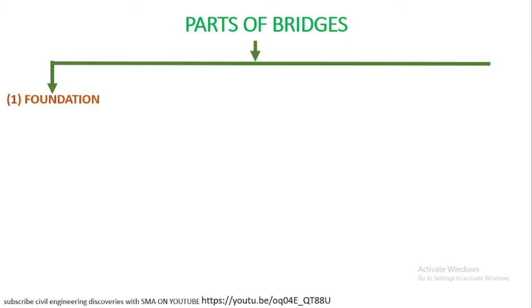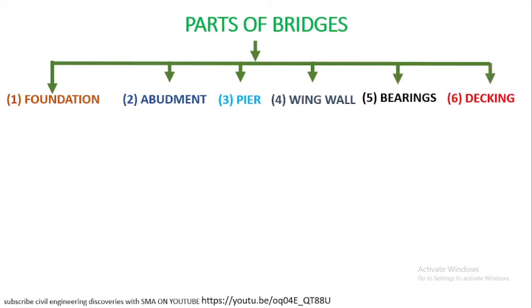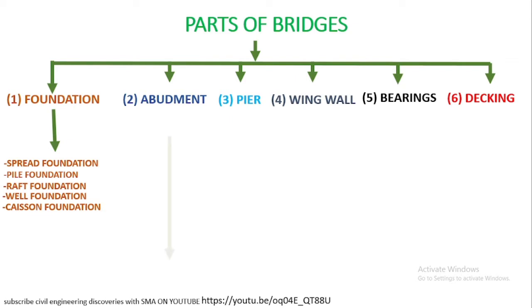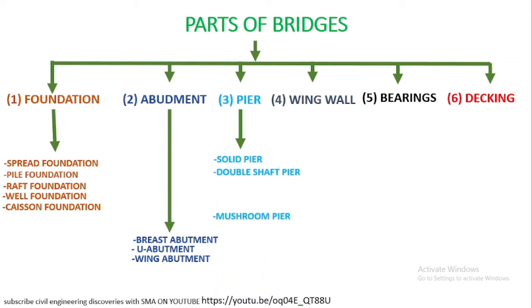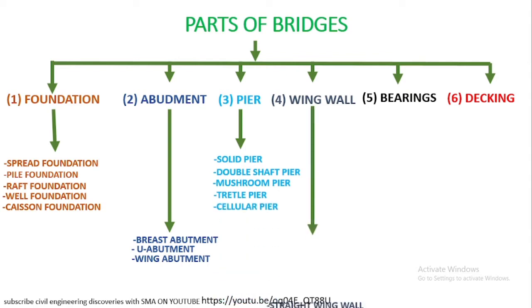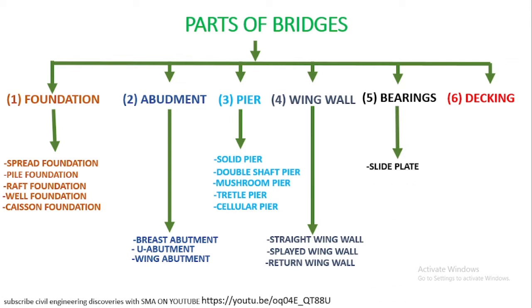The parts of the bridge are divided into six main parts: the first is foundation, the second is abutment, the third is pier, the fourth is wing wall, the fifth is bearing, and the sixth is decking. Foundation is further classified into spread foundation, pile foundation, rock foundation, well foundation, and caisson foundation. Abutment is classified into braced abutment, U-abutment, and wing abutment. Pier is divided into solid pier, double-sharp pier, mushroom pier, trestle pier, and cellular pier. Wing wall is classified into straight wing wall, splayed wing wall, and return wall. Bearing types include slide plate, sole plate, knuckle plate, rocker plate, and roller plate.